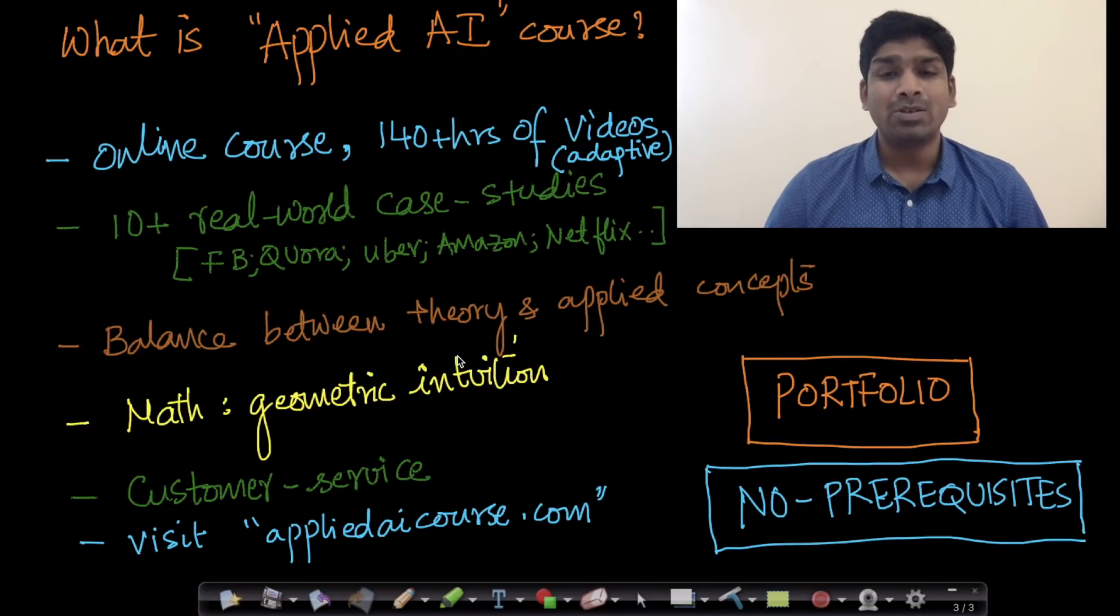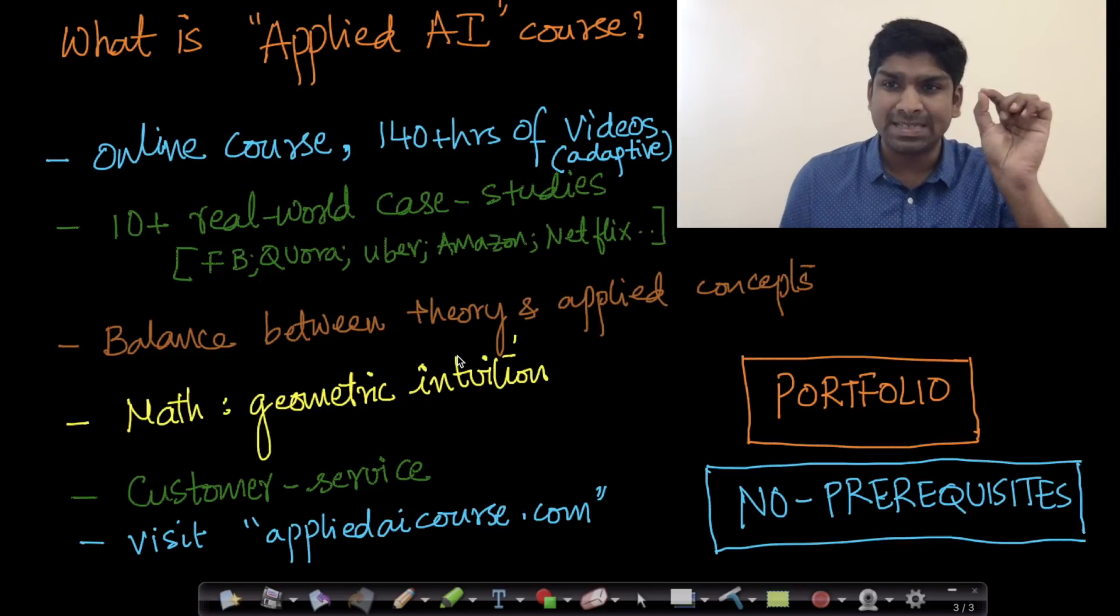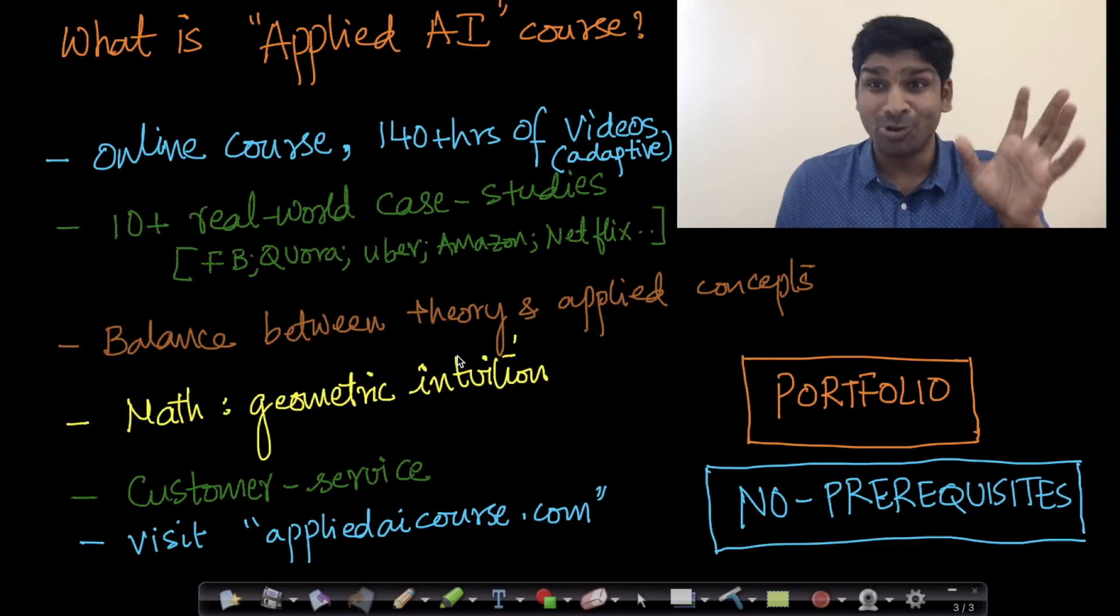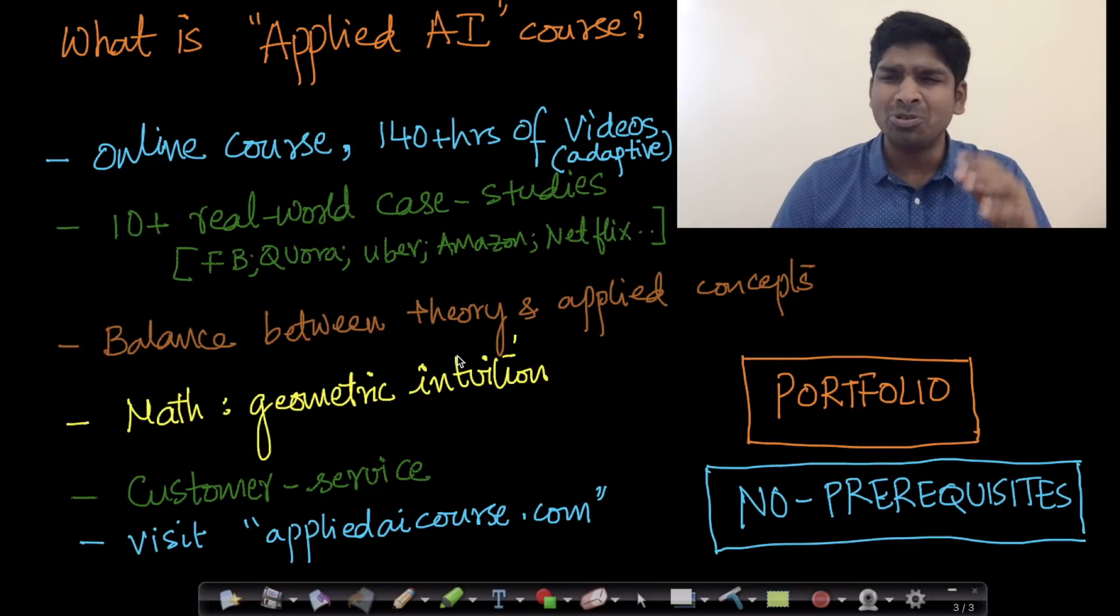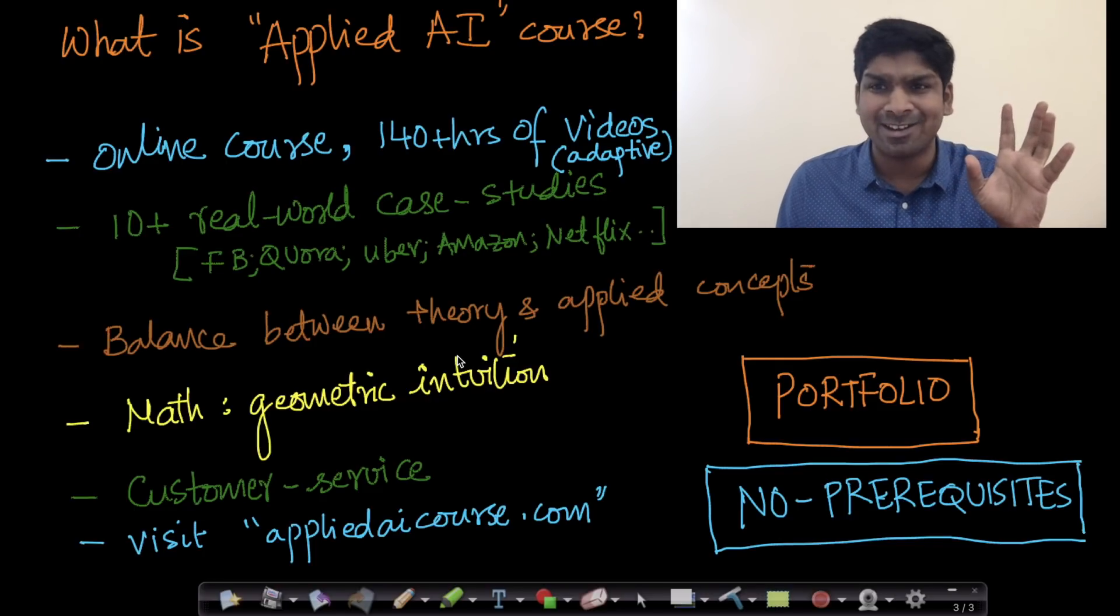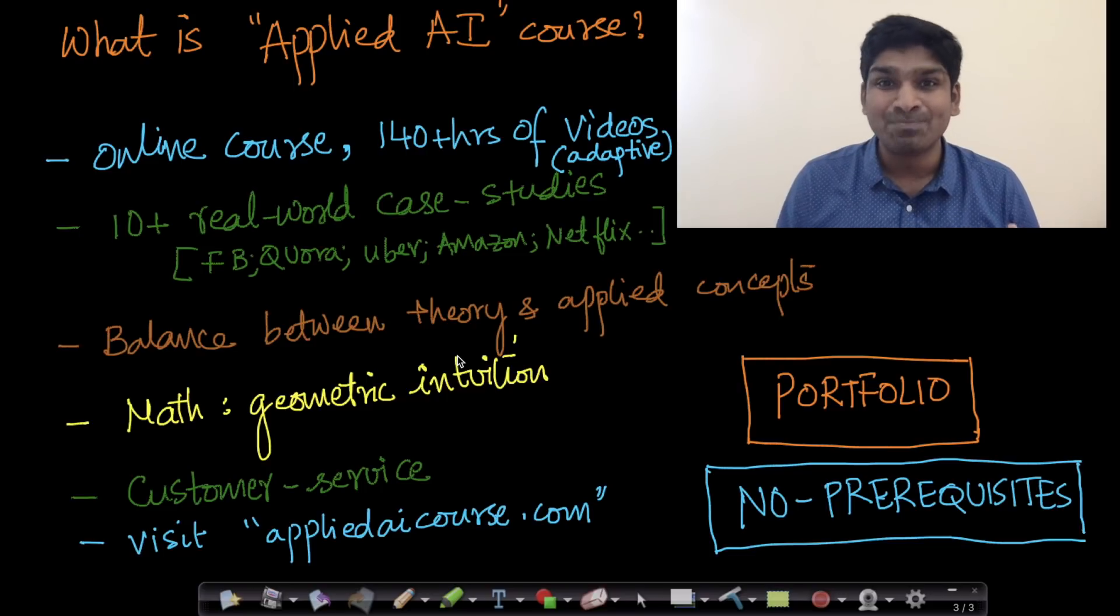As part of our 140+ hours of video content, we explain everything from basics. We assume that you've forgotten or you don't know what is conditional probability, or you've seen the bell curve—the Gaussian distribution—but you don't know what it is, or you remember reading it in your undergrad but mostly have forgotten all of it.